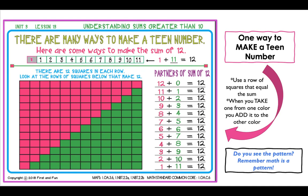As we go throughout the week, we are going to figure out that there are many ways to make a teen number. Here's one way we're going to work on — making a teen number. Let's look at the number 12. If you make a row of 12 squares, you can color them with two different colors. If I color them all pink, I have 12 pink and 0 green: 12 plus 0 equals 12. If I color 11 of them pink and one green, then 11 plus 1 equals 12.